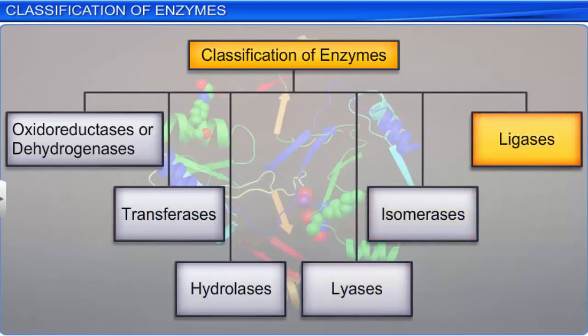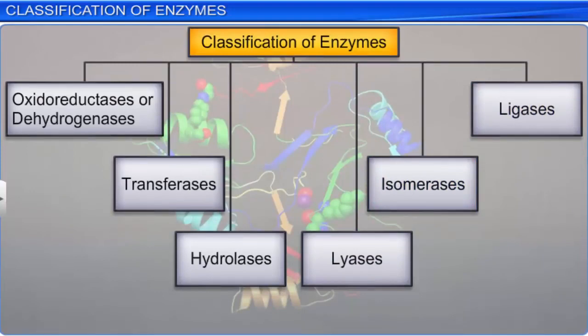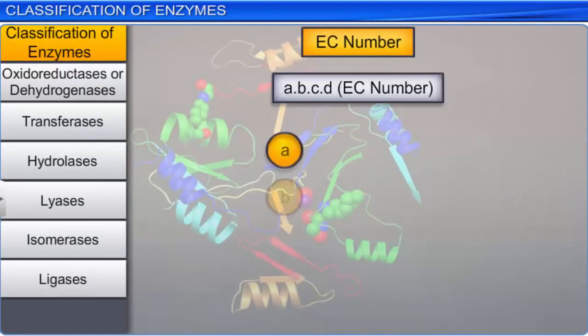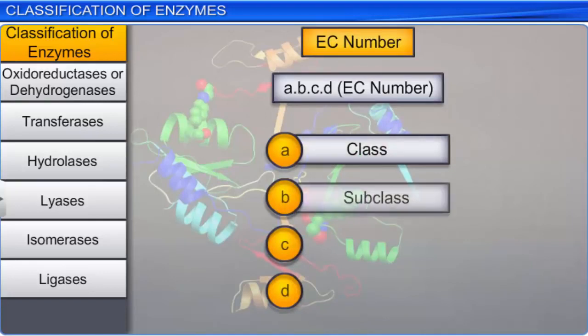Each of these classes is further divided into 4 to 13 subclasses named by a four-digit number or EC number. In an EC number, for example, A.B.C.D, A will denote the class, B the subclass, C the sub-subclass, while D will denote the sub-sub-subclass.